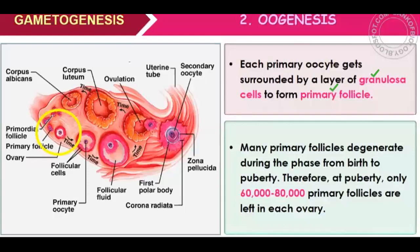Each primary oocyte, which is the mother cell, is arrested in prophase 1. Out of the primary oocytes there is a layer of cells, and after the granulosa layer we start to call them primary follicles.